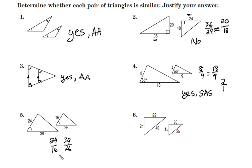And it turns out they both do reduce to 2 thirds. So the answer is yes, the two triangles are similar. And again, we have side-angle-side similarity.